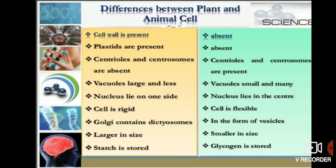Second difference: plastids are present in plant cells but absent in animal cells. Because plastids are present in plant cells, plant cells carry out photosynthesis — they prepare food by the process of photosynthesis.